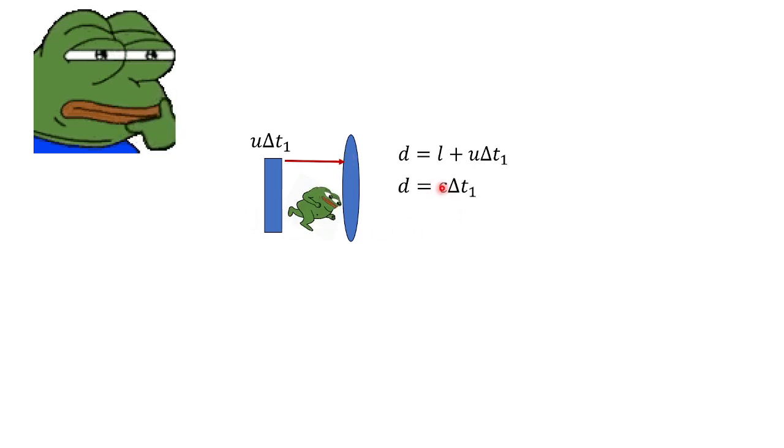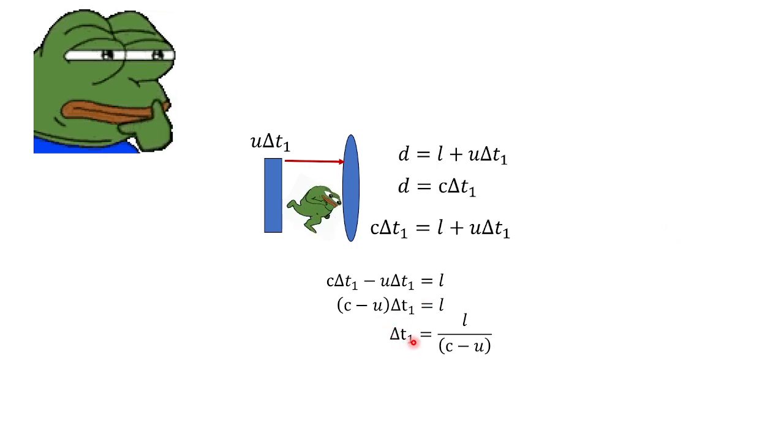So what would be the distance traveled by the laser then? It's just the speed of the laser c times the time. And we can equate this seeing that this is the same distance. So c delta T sub 1 is equal to the body length of Pepe plus the distance traveled by Pepe. And you just have to manipulate it algebraically to arrive at the expression delta T sub 1, which is equal to the body length of Pepe over the difference on the speed of light and the relativistic speed of Pepe.